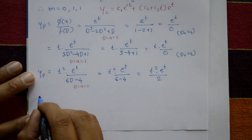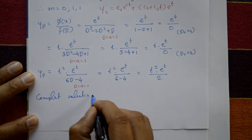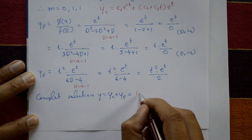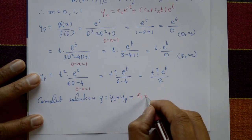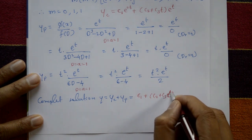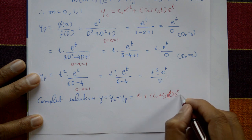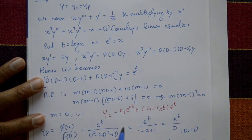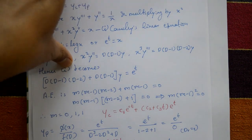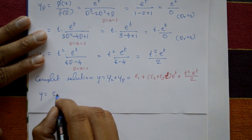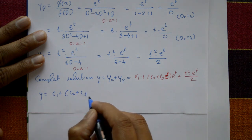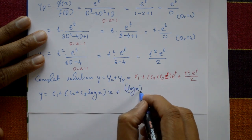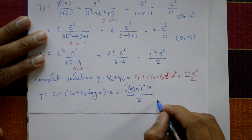The complete solution is y = yc + yp = c₁ + (c₂ + c₃·t)·e^t + t²·e^t/2. Now substitute back: t = log x and e^t = x. Therefore, y = c₁ + (c₂ + c₃·log x)·x + x·(log x)²/2. This is the required solution.